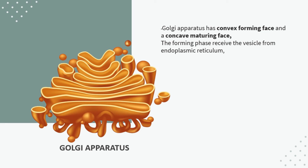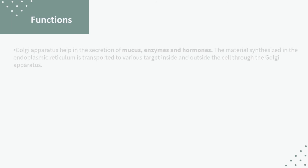One important point is that lysosomes are formed from the Golgi apparatus. Now let's discuss the functions of the Golgi apparatus. The Golgi apparatus helps in the secretion of mucus, enzymes, and hormones. The material synthesized in the endoplasmic reticulum is transported to various targets inside and outside the cell through the Golgi apparatus.